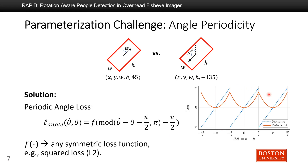In this figure, we plot an example of the periodic L2 loss and its derivative. We can see this loss function is continuous and piecewise convex. Although it is not differentiable at some points, we can avoid them by manually setting the derivatives at those points.